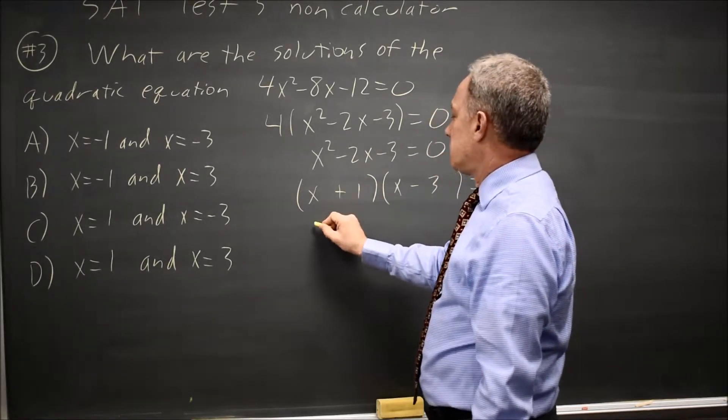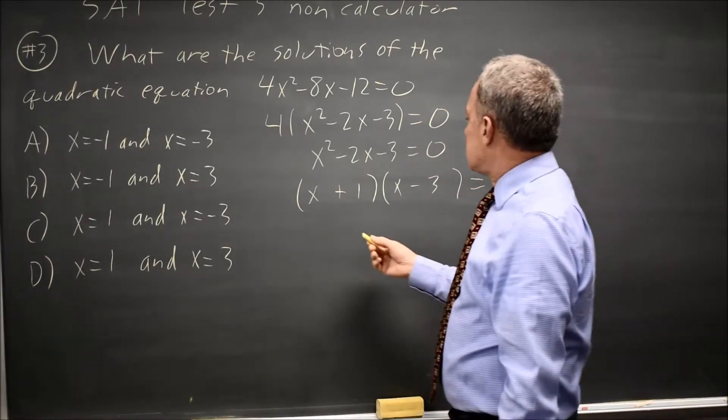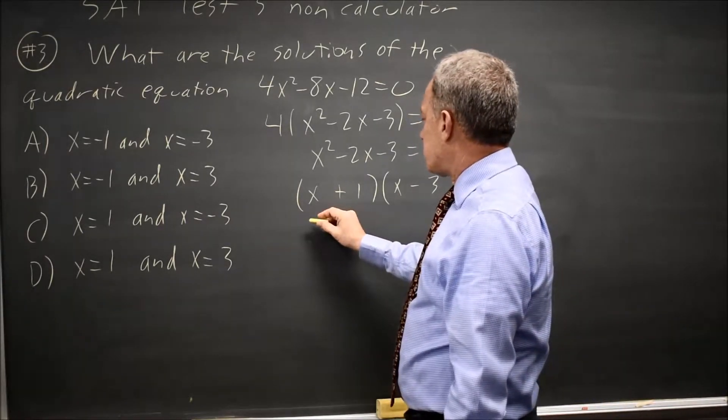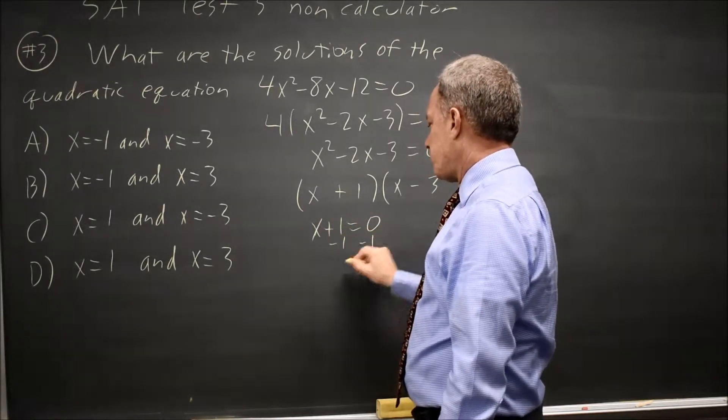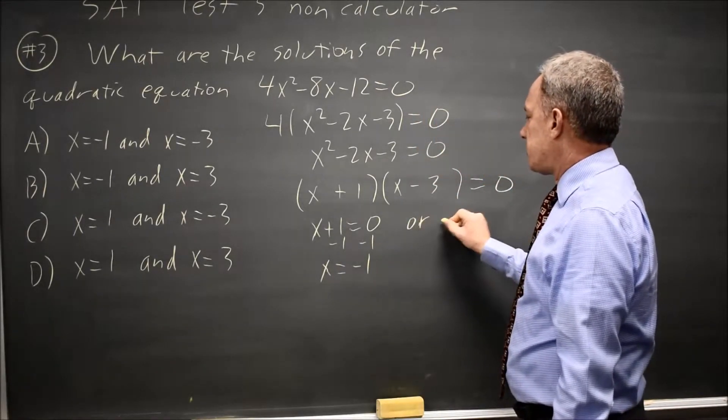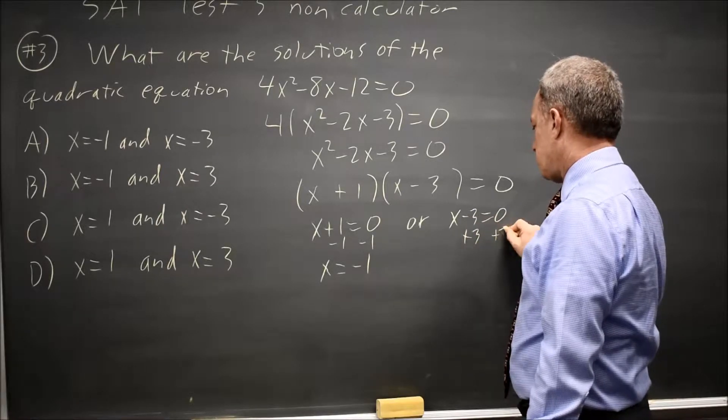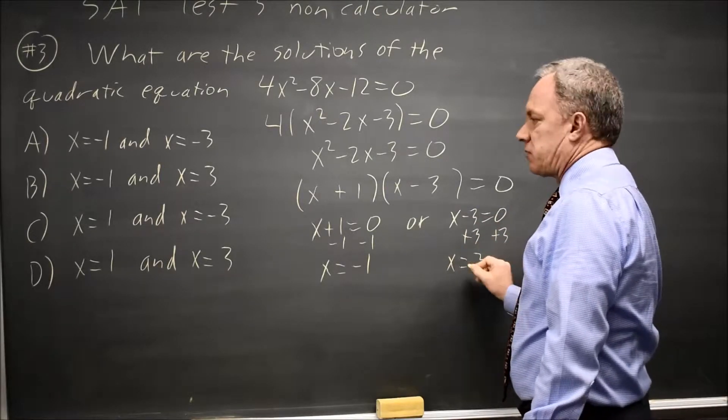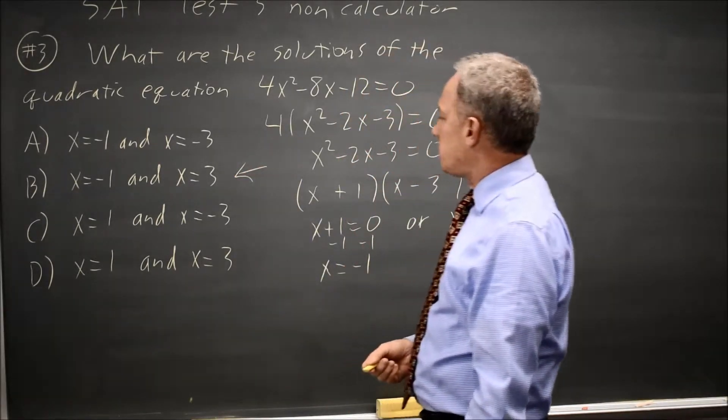If this product is 0, and I repeat this to myself every time I solve a product equals 0. If the product is 0, either the first factor is 0, so x equals negative 1, or the second factor is 0. So x equals positive 3, and x equals negative 1, x equals positive 3 gives us answer choice B.